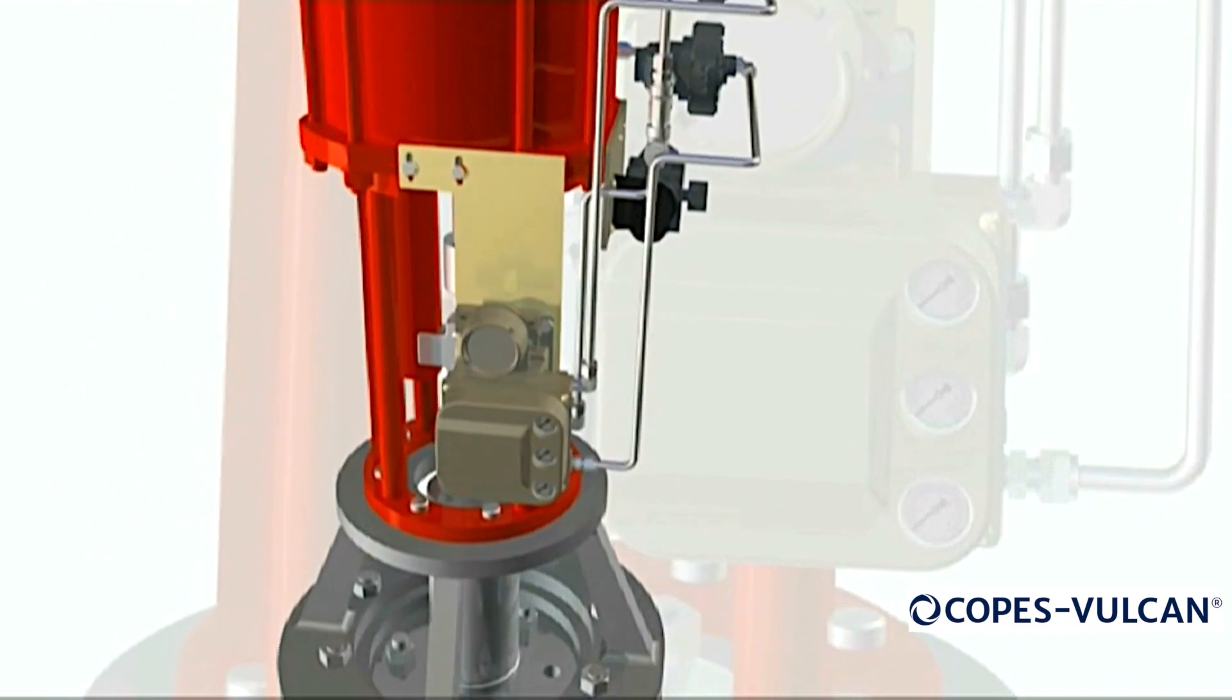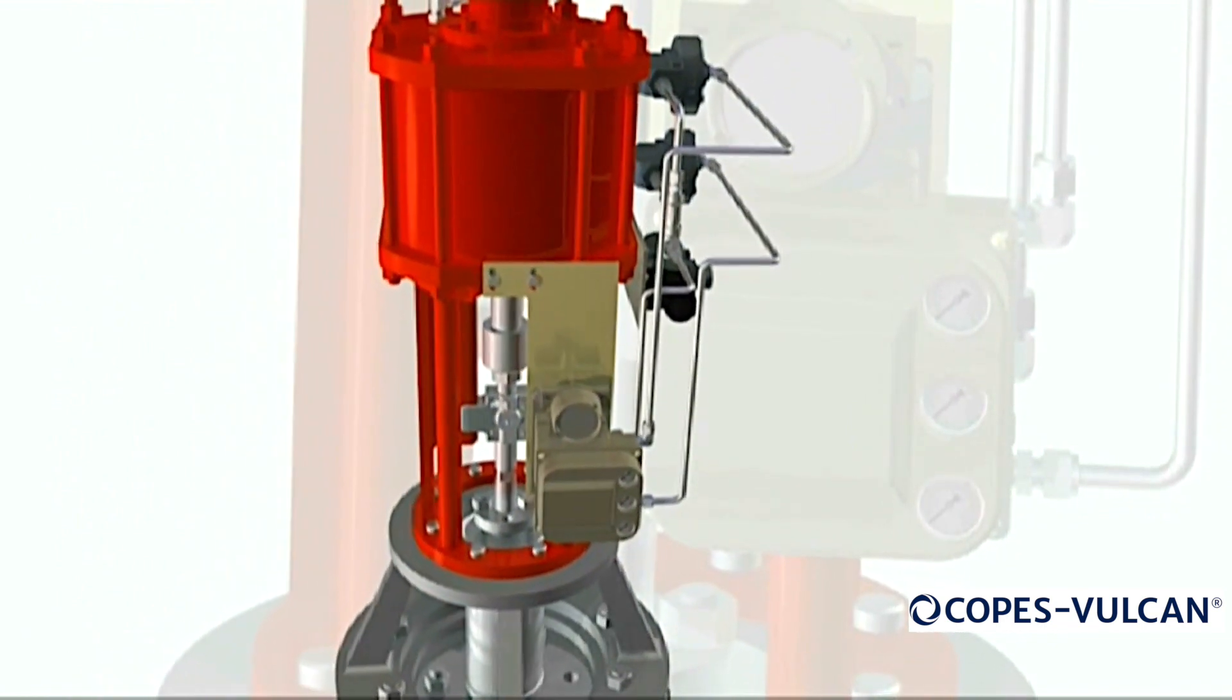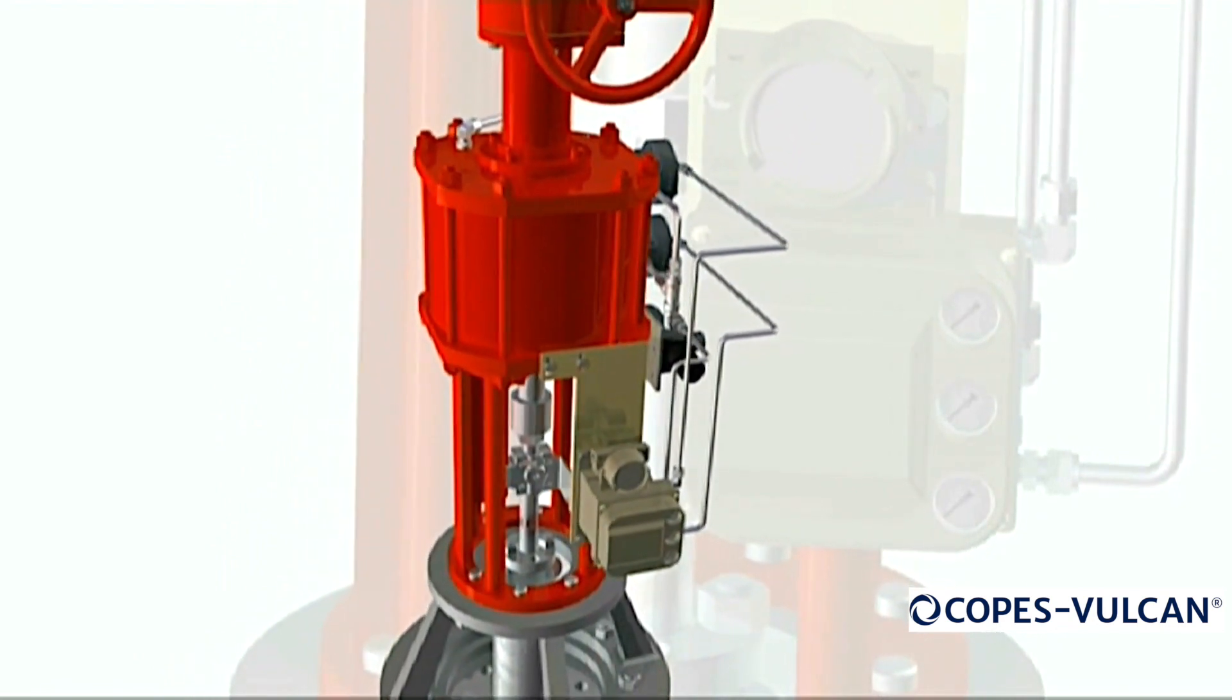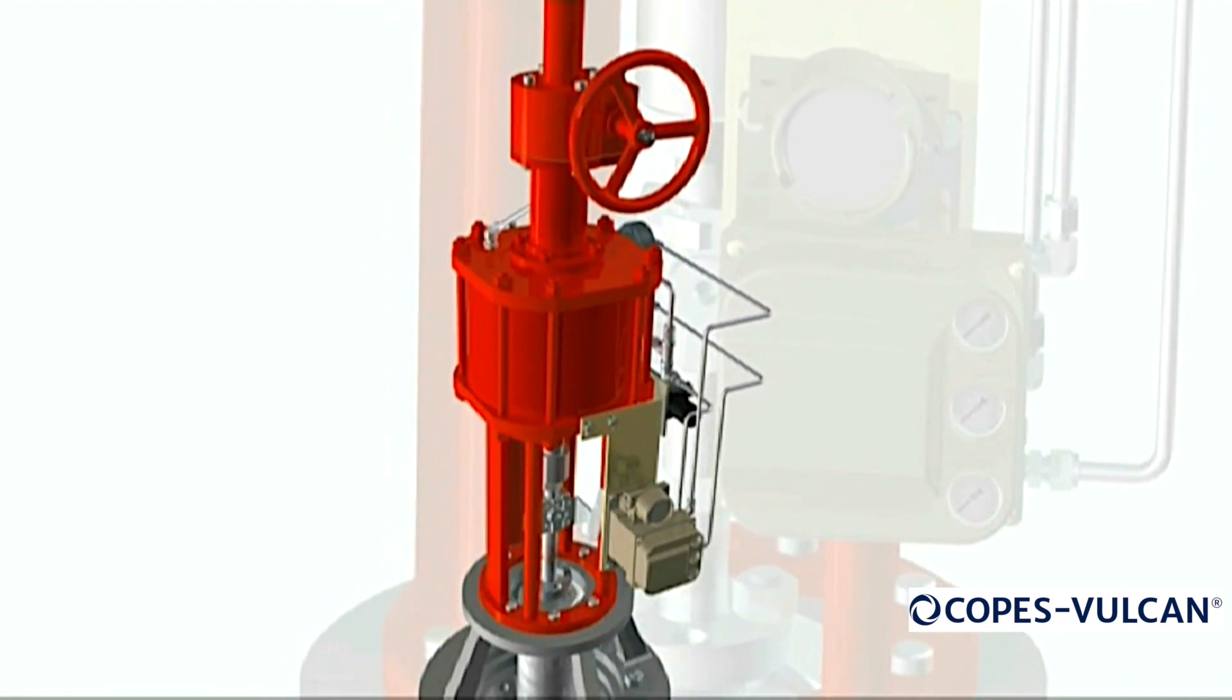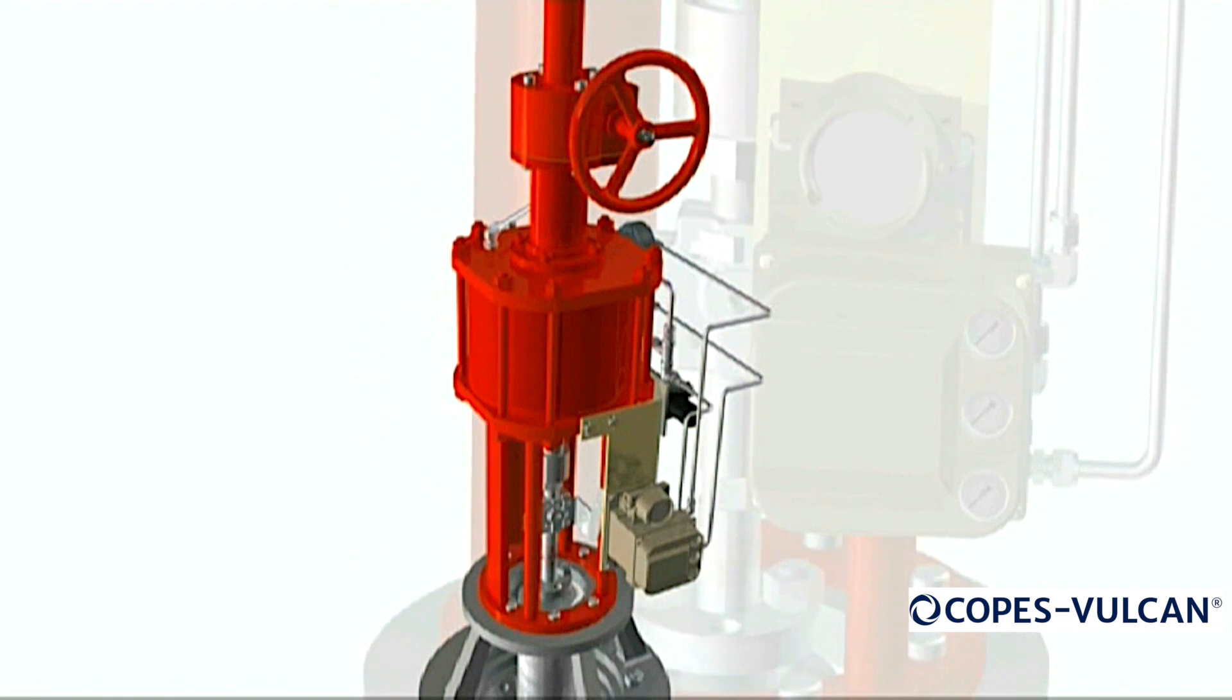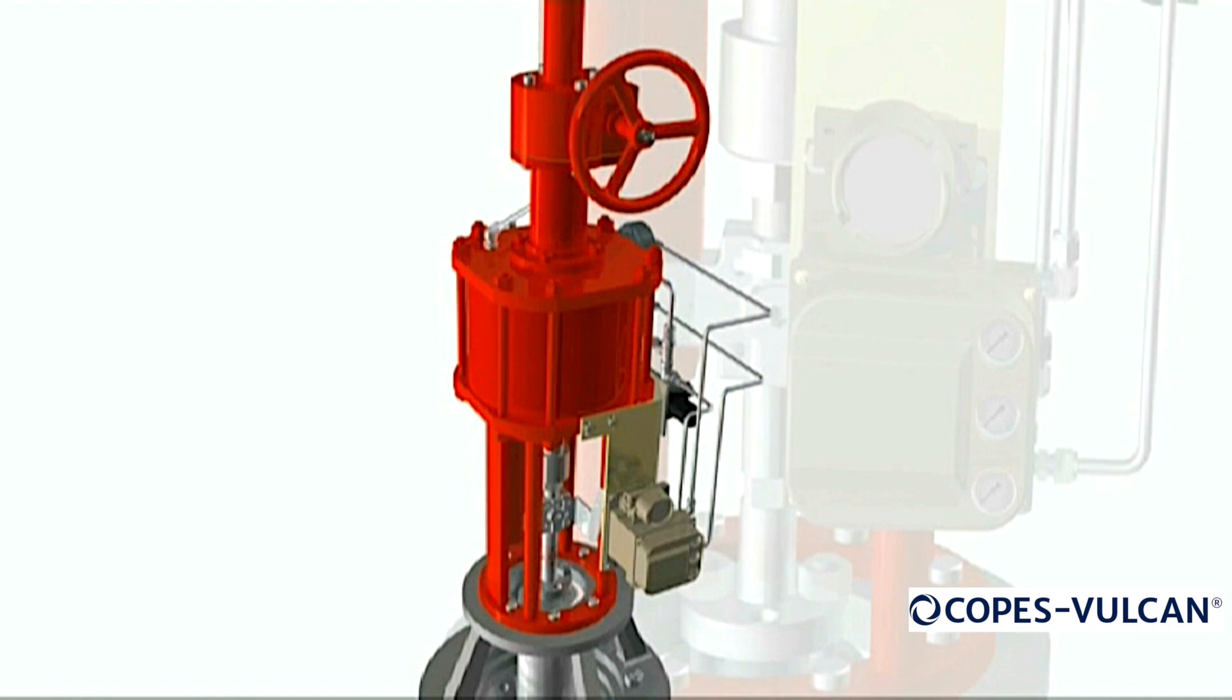The DSCVSA can be mounted in the steam header in any orientation, allowing full flexibility to the plant piping engineers. All actuators supplied with the DSCVSA steam turbine bypass valves are designed to be self-supporting in a horizontal orientation. Therefore, no additional supports are required.